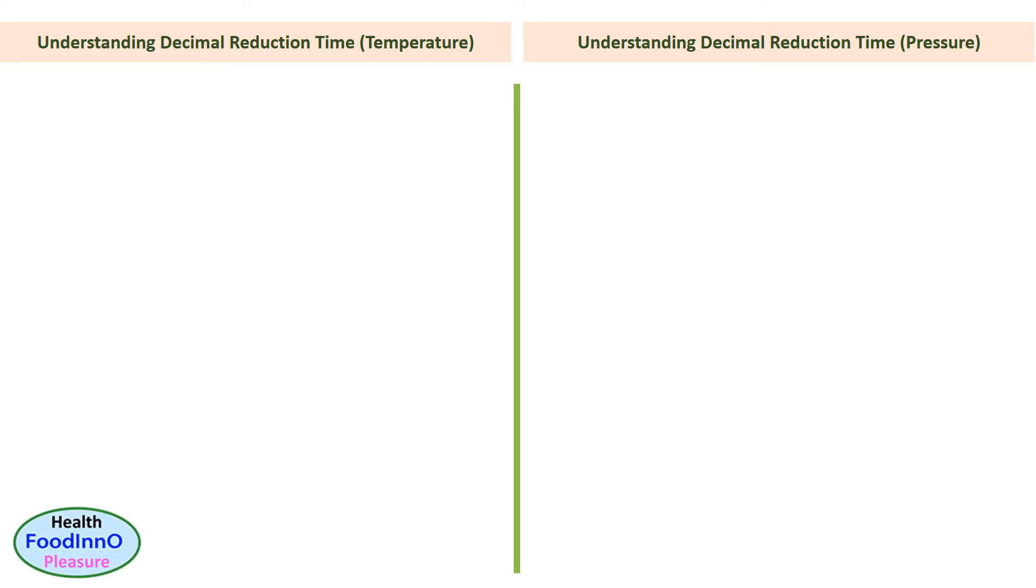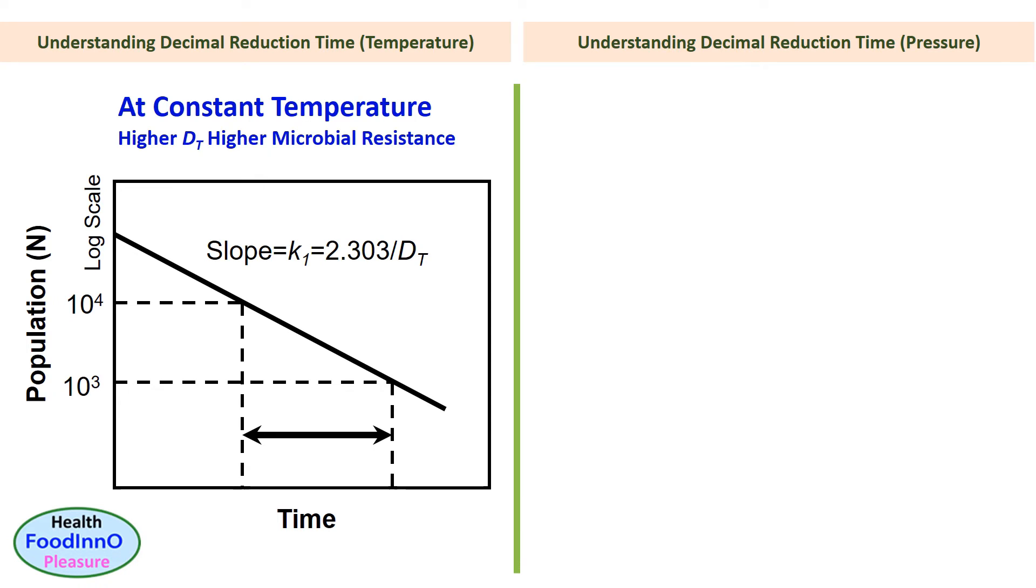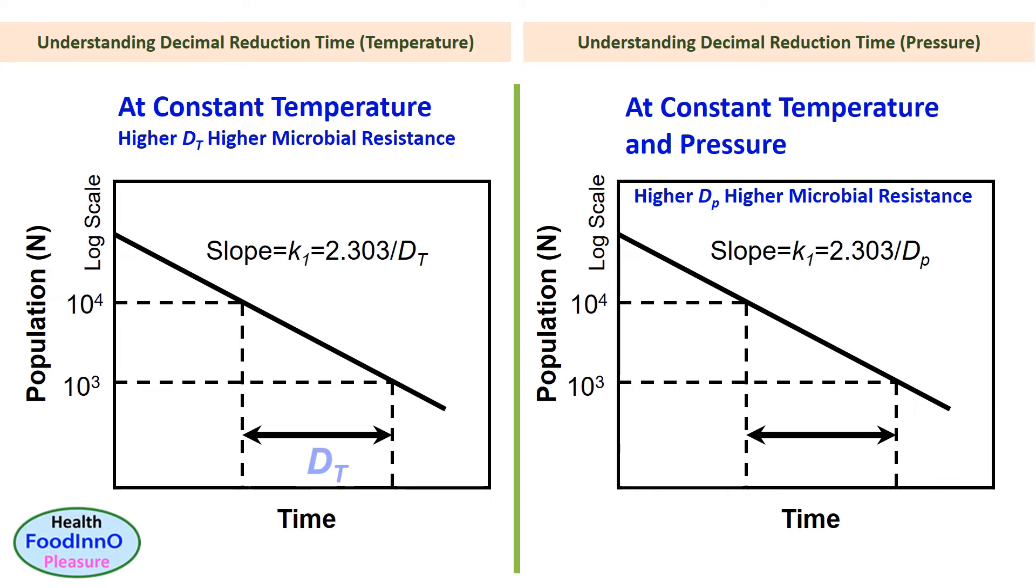In order to understand microbial death, first we need to understand decimal reduction time, since microbial resistance to heat and pressure can be visualized from the decimal reduction time. Temperature decimal reduction time, DT, is defined as the time required to reduce one log cycle decrease of the number of microbes at constant temperature. Pressure decimal reduction time, DP, is defined as the time required to reduce one log cycle decrease of the number of microbes at constant temperature and pressure. Higher the decimal reduction time, higher the microbial resistance, that is more difficult to kill, thus takes longer time to deactivate.